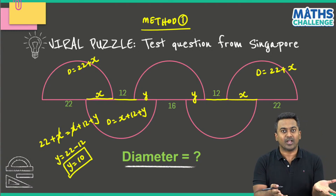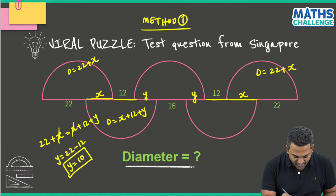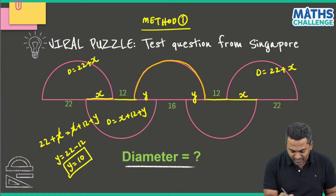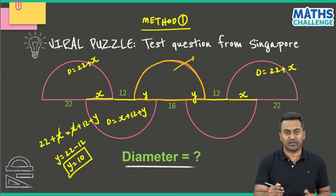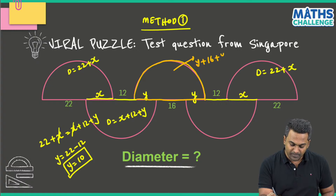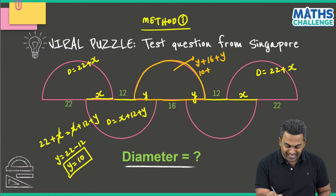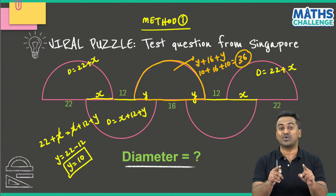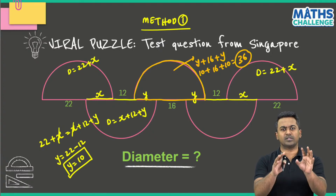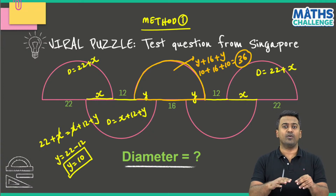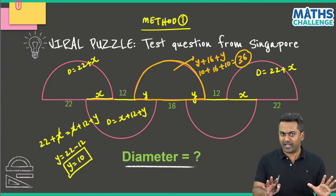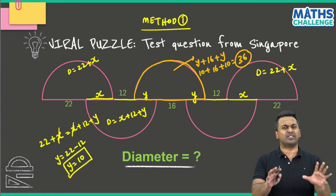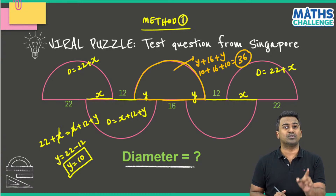So we've figured out Y equals 10. Now the semicircle highlighted is only in terms of Y, so the diameter of that semicircle is Y plus 16 plus Y. Substituting Y equals 10: 10 plus 16 plus 10 gives us the diameter as 36. So 36 is going to be the answer. This is the first method - assuming the missing parts as variables and solving using equations.